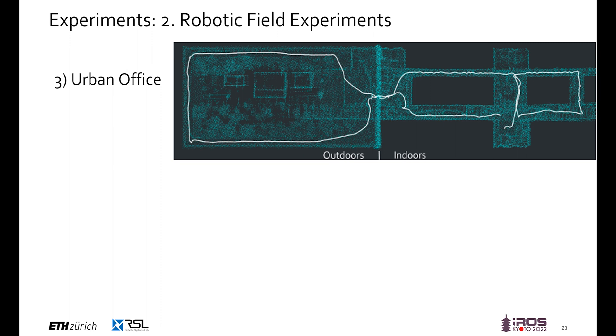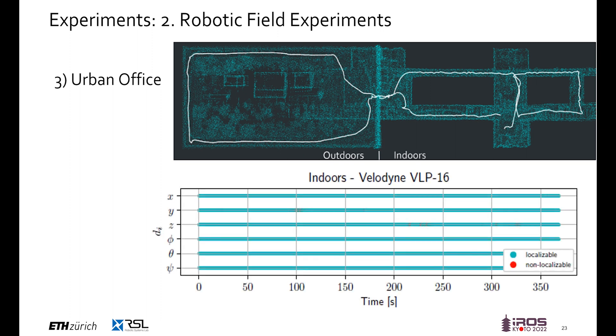As a sanity check, we also deploy the model in an urban environment, which is in large parts localizable. As desired and expected, the network predicts full localizability for all directions and hence allows for the full exploitation of the computed LiDAR odometry.